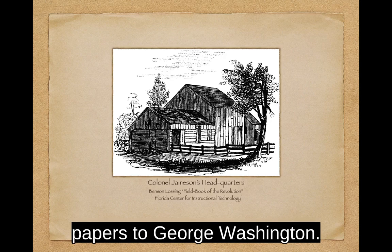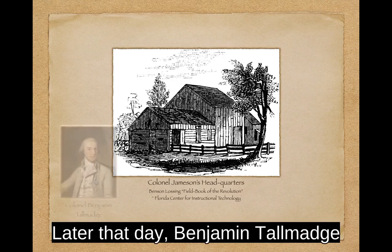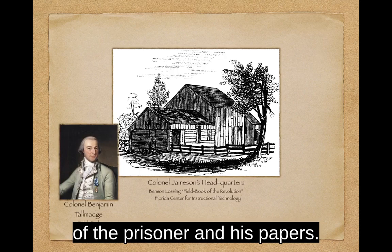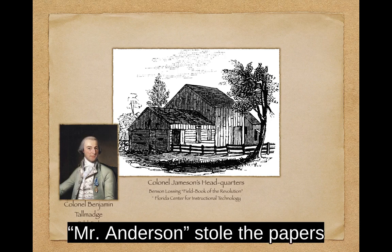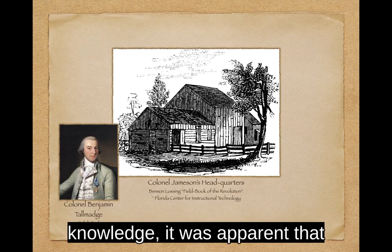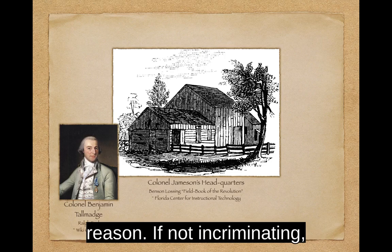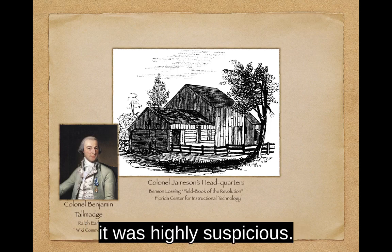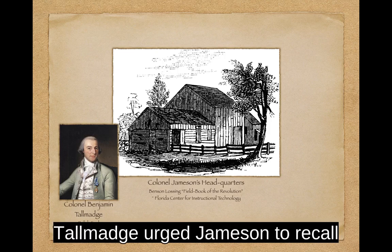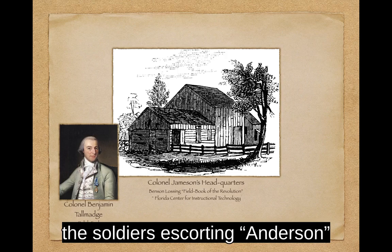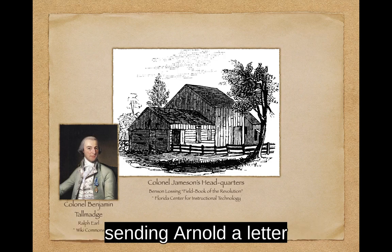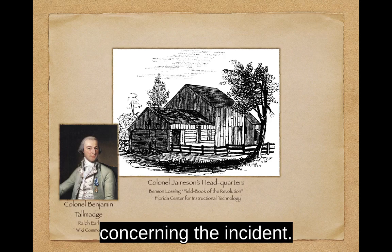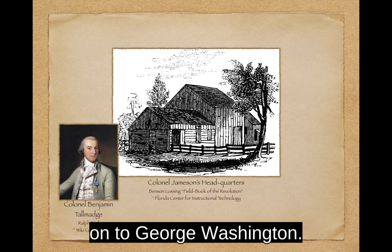Jameson sent the confiscated papers to George Washington. Later that day, Benjamin Talmadge arrived at Northcastle and learned of the prisoner and his papers. He became suspicious — even if Mr. Anderson had stolen the papers without Benedict Arnold's knowledge, it was apparent that Arnold had met with the spy for some reason. Talmadge urged Jameson to recall the soldiers escorting Anderson and return the prisoner. Jameson did, but he insisted on sending Arnold a letter concerning the incident. The captured documents continued on to George Washington.